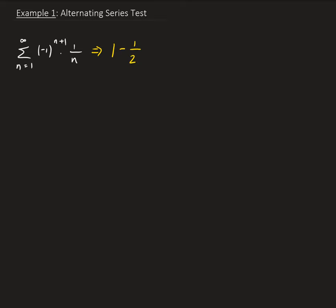When n is 3, that's going to give us minus 1 to the fourth power. That's going to give us a positive, so then 1 third. When n is 4, we're going to get minus 1 to the fifth. That's going to give us minus and then 1 over 5. So this is definitely alternating.